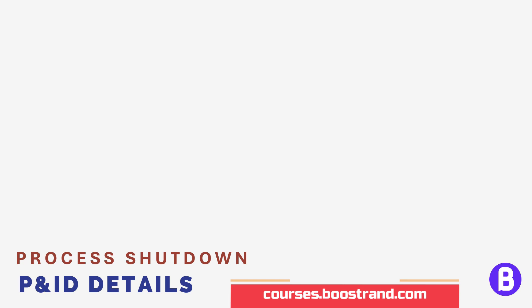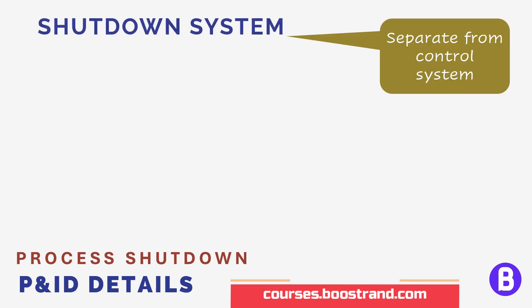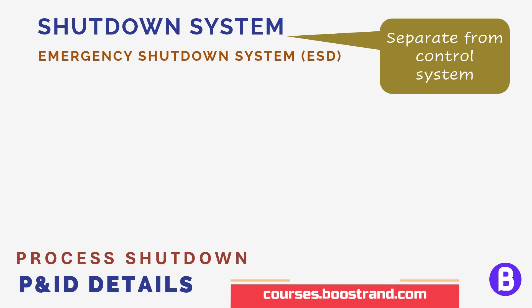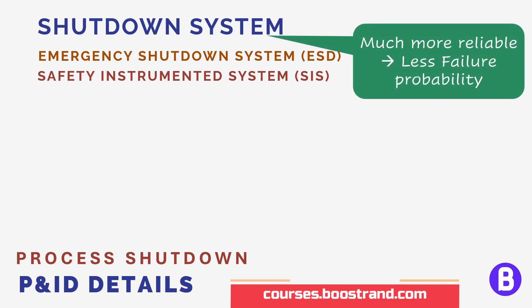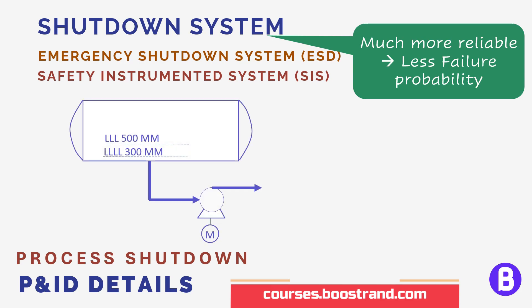In addition to the control logic, the P&ID also shows the shutdown logic. Usually, shutdown logic is executed by a shutdown system which is separate from the DCS. It's called the ESD system, which stands for emergency shutdown, or it can also be called SIS — safety instrumented system. The shutdown system should have higher reliability than the DCS, as we are talking here about safety and protection of personnel and equipment, not just normal operation. For example, if we want to protect the pump from cavitation, a signal from the level instrument is sent through a hardwire to the shutdown system.